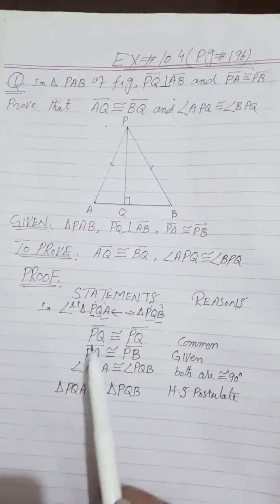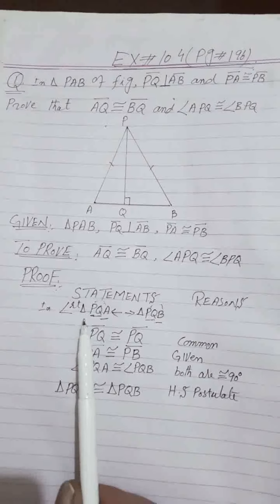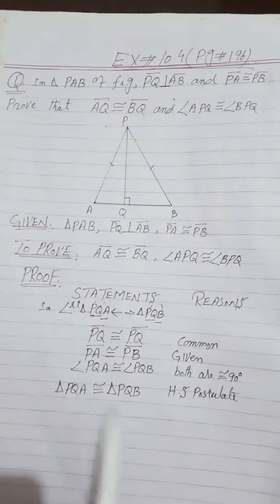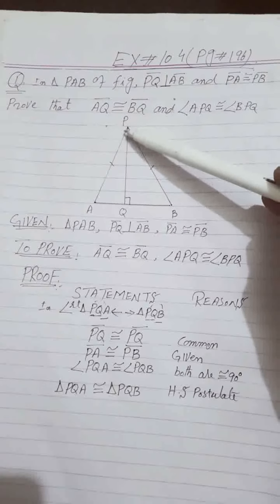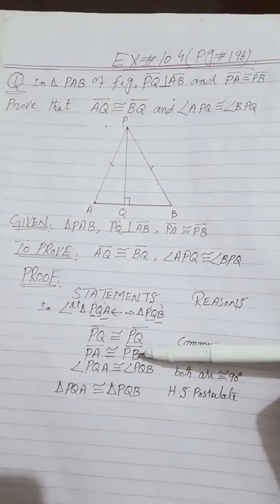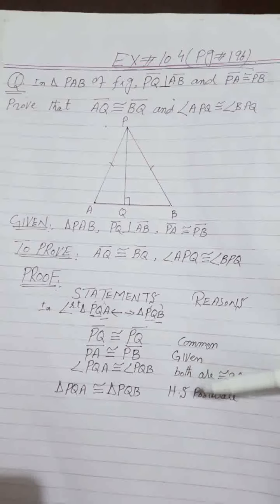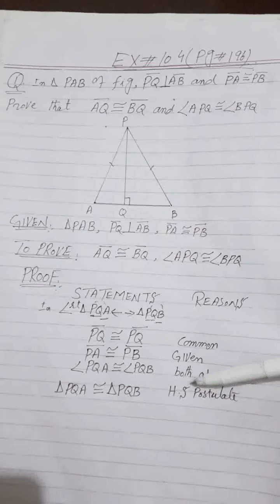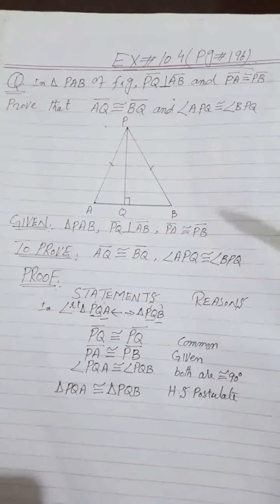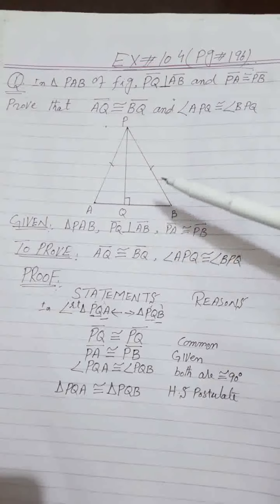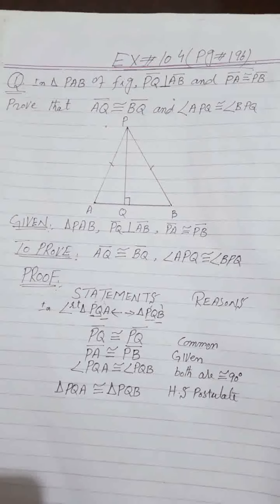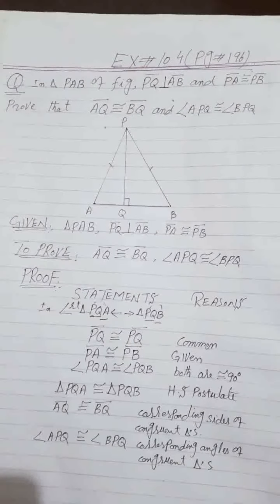If the triangle is a right angle triangle and one side is the hypotenuse, we apply the HS (Hypotenuse-Side) postulate instead of the SAS postulate. We apply this postulate. The triangles are congruent, and the corresponding sides and angles are congruent.